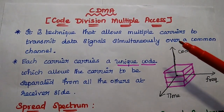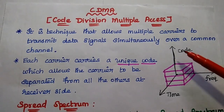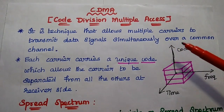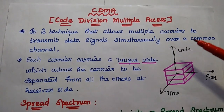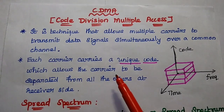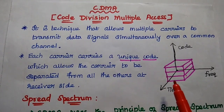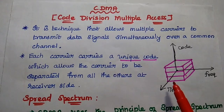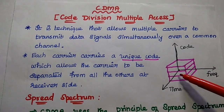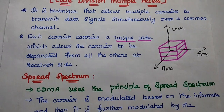CDMA is a multiple access technique that allows multiple users to transmit data signals simultaneously over a common channel within the bandwidth. How can we separate individual users' data at the receiver side? Each carrier carries a unique code, which allows the carrier to be separated from all other carriers at the receiver side. In CDMA, frequency is common, time is common, but the code is unique for each user.